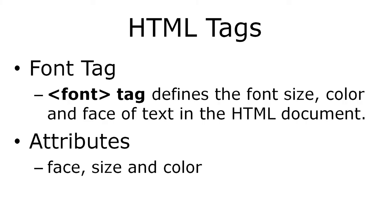The font tag has three main attributes. The first is 'face', which is used to change the font style. The second is 'size', which is used to change the font size. The third is 'color', which is used to give a particular color — either a hexadecimal code or a color name.